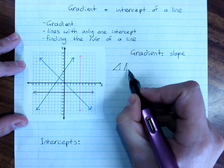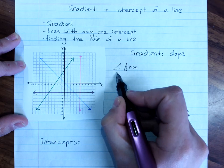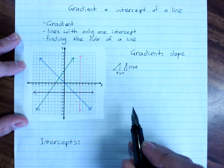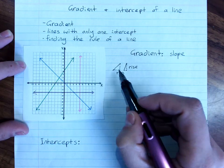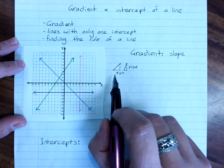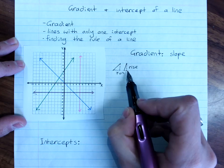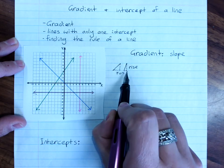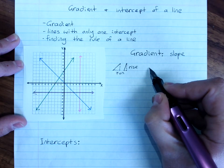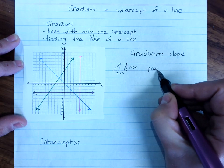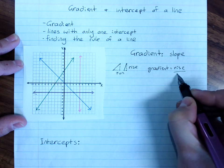The amount that a line goes up is its rise, and the amount that goes across is its run. And so the gradient, the slope of a line, how steep it is, depends on how far it goes up compared to how far it goes across. And actually the formula for the gradient is its rise divided by its run.